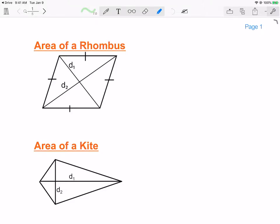Hello everyone, it's Mr. Spinelli. Today we're going to talk about finding the area of a rhombus and a kite. Lucky for you, they're the same formula. Let's see exactly why.